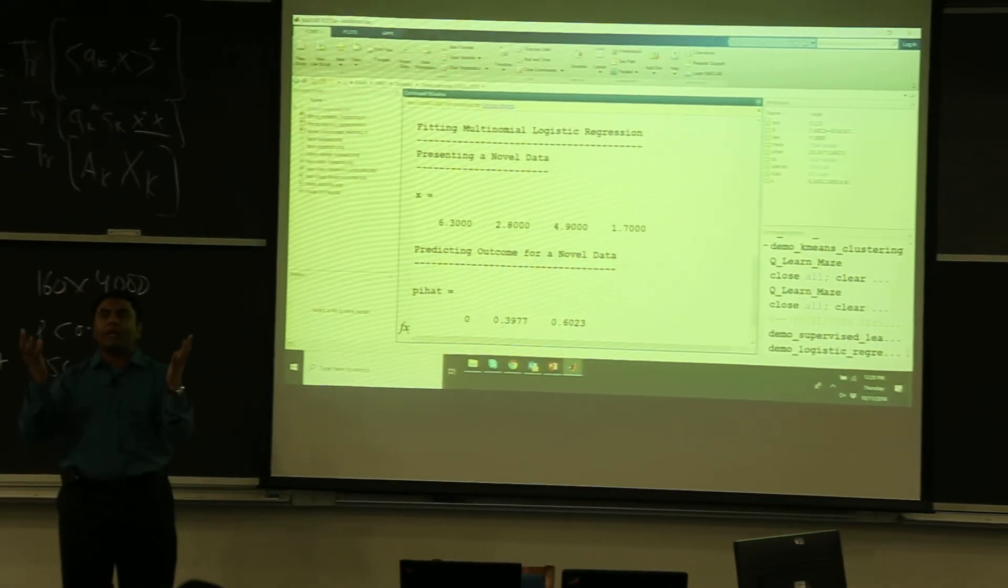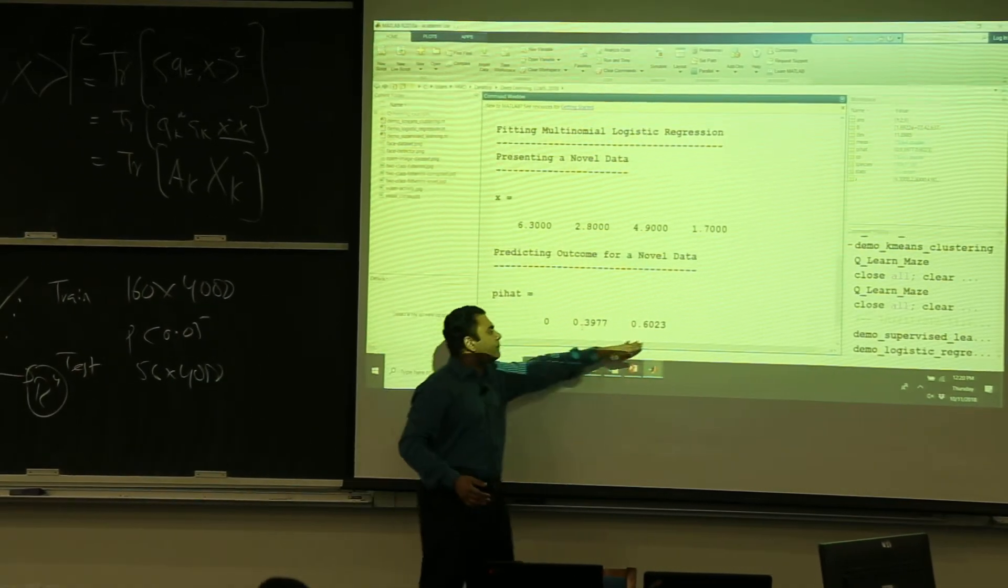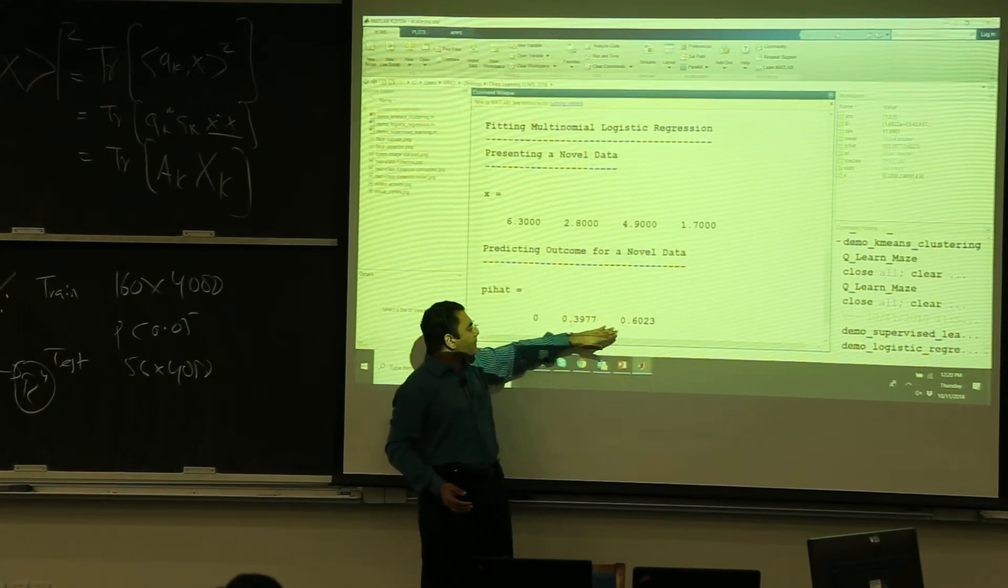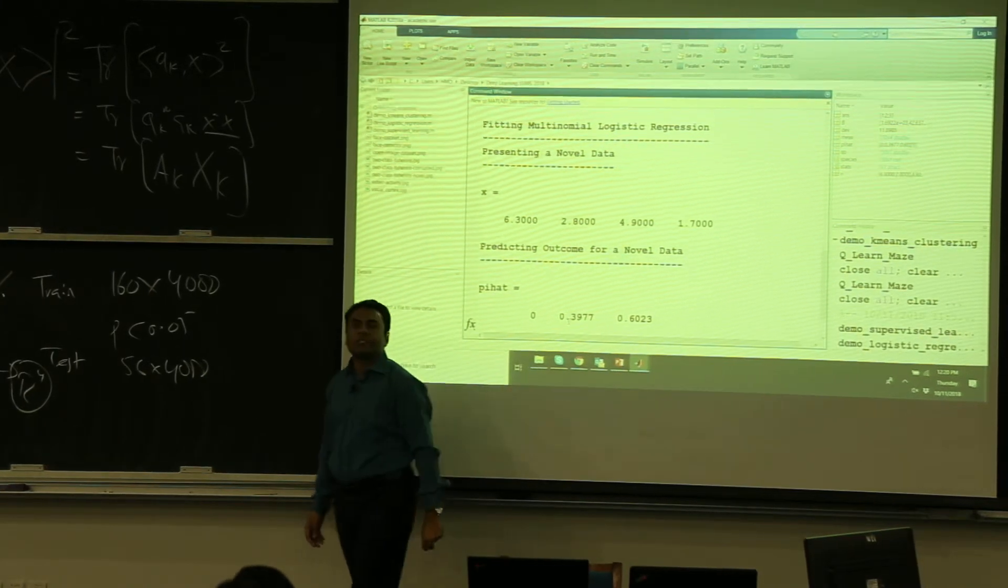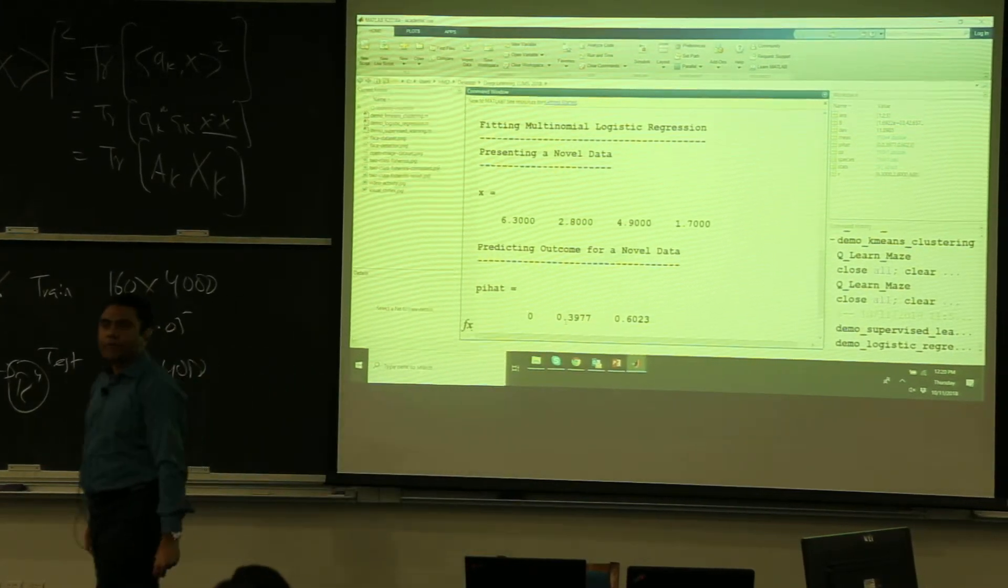It is telling me with a certain probability that I believe that by 60% chance it is species 3, by 40% chance this is species 2.